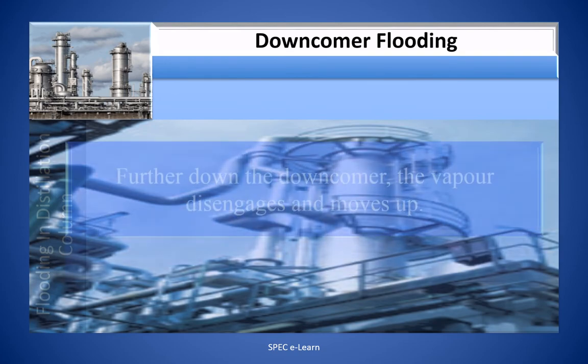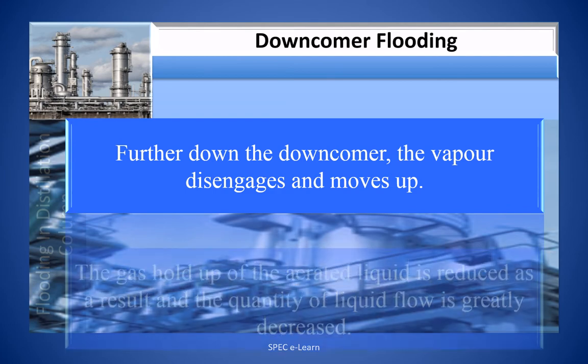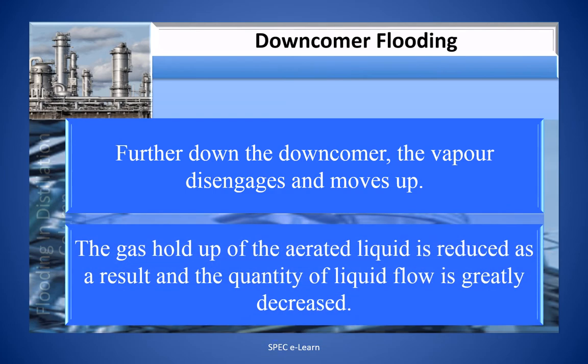Further down the downcomer, the vapor disengages and moves upward. The gas holdup of the aerated liquid is reduced as a result, and the quantity of liquid flow is greatly decreased.